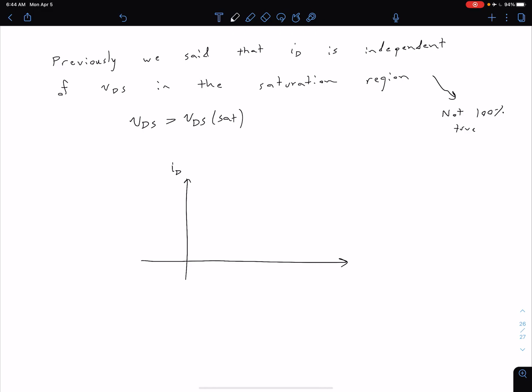We had our ID versus our VDS. Remember we said we had some family of IV curves. So it looks something like this. As we have different gate voltages, we get different curves corresponding to different amounts of drain currents. So we have something that looks like this.